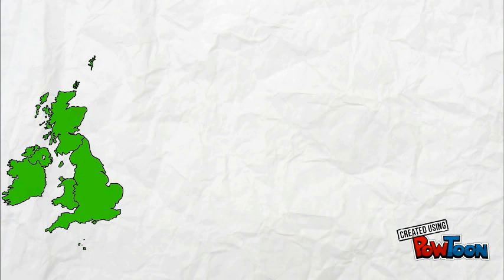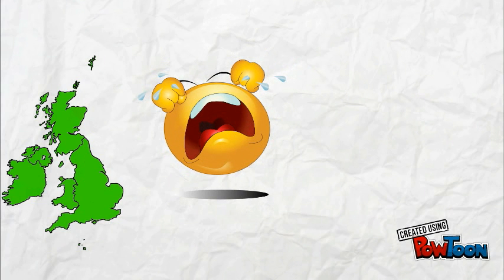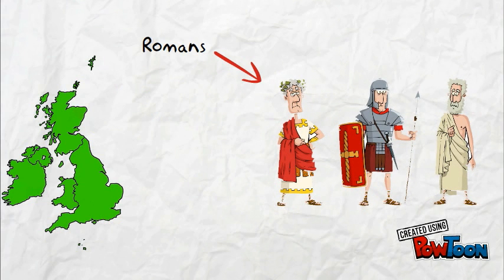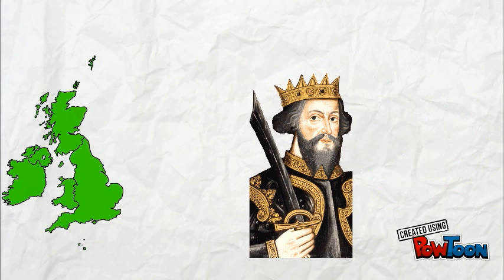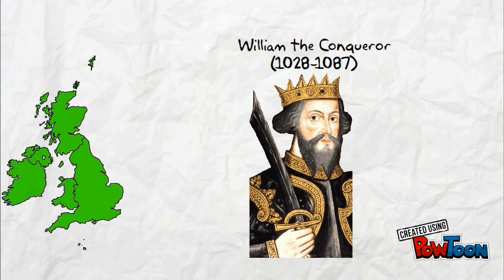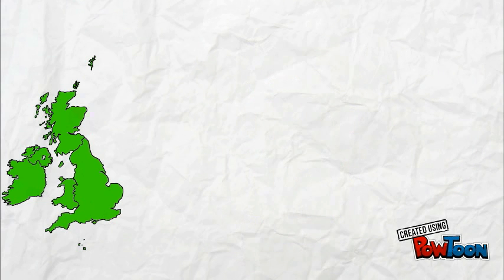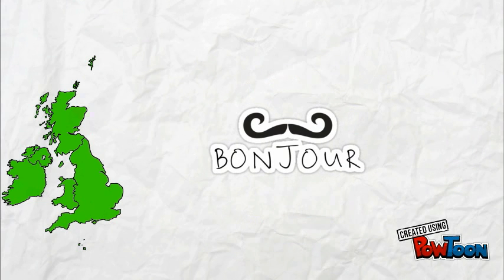The British Isles — the continent with a series of unfortunate events. After being invaded by the Romans, largely impacting the landscape and language within the continent, the British Isles were once again attacked in 1066 by William of Normandy, or William the Conqueror. The Norman invasion resulted in the displacement of English as the primary language, as the people were obliged to speak French.